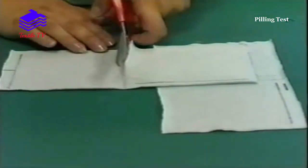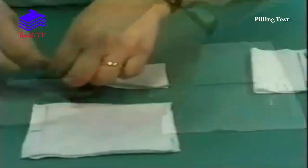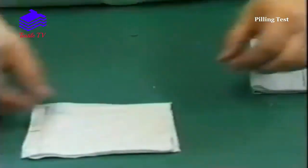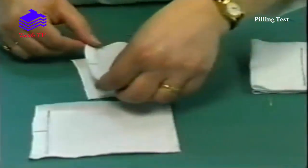Test specimens are cut from the sample. The specimens are folded in half, two in the length direction and two in the width direction.